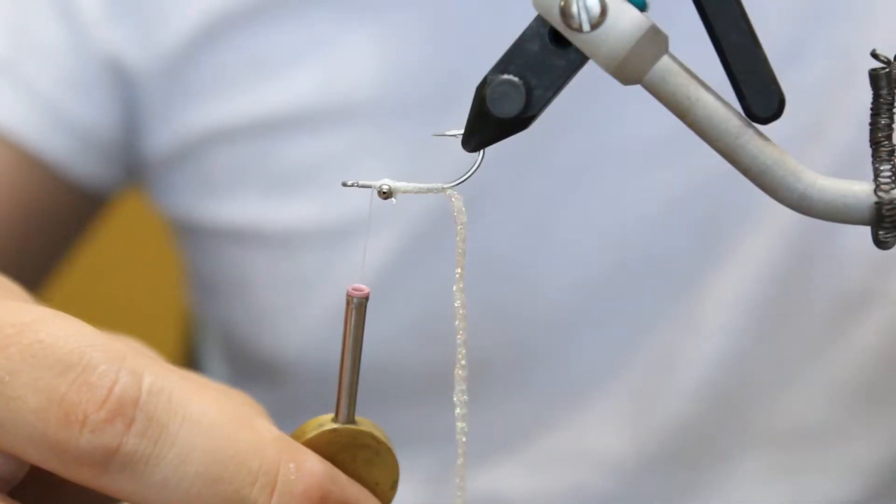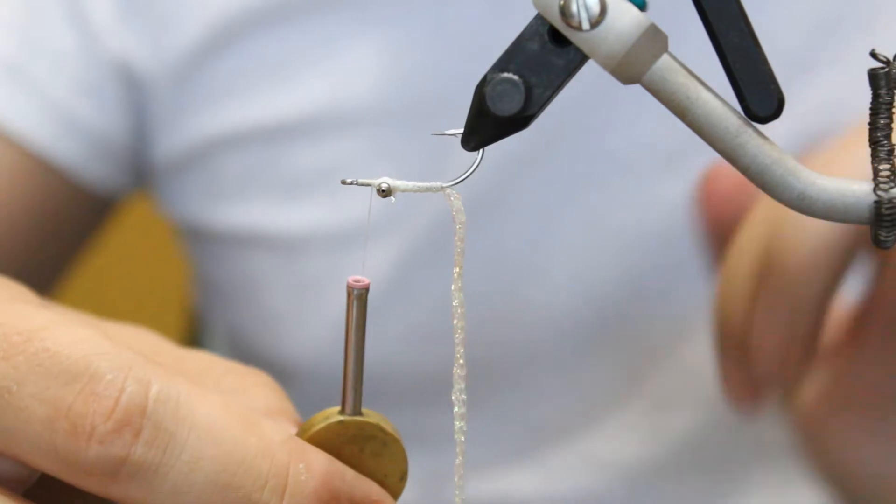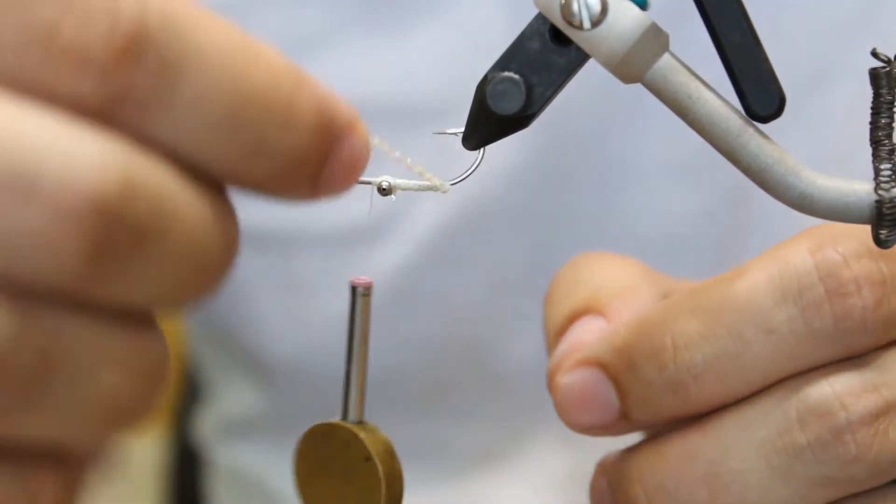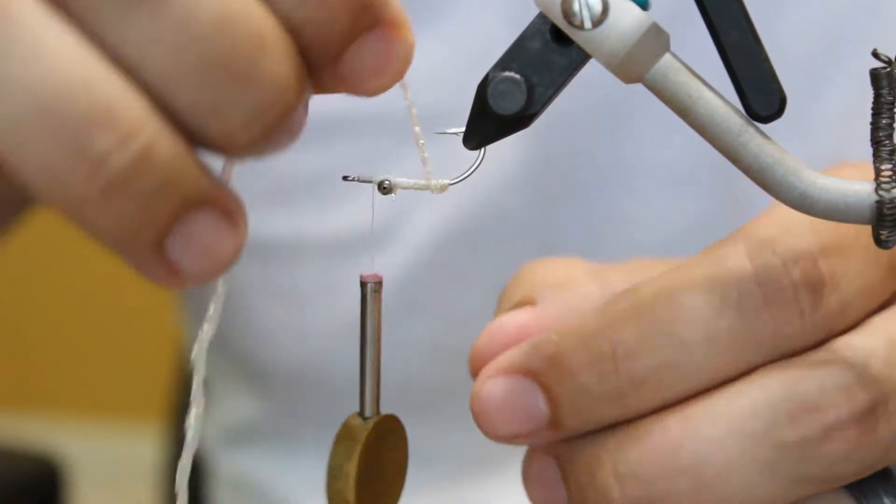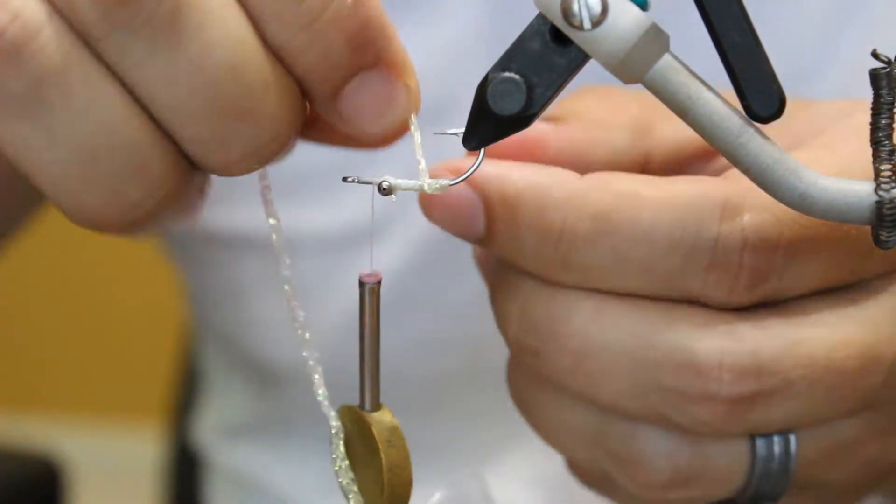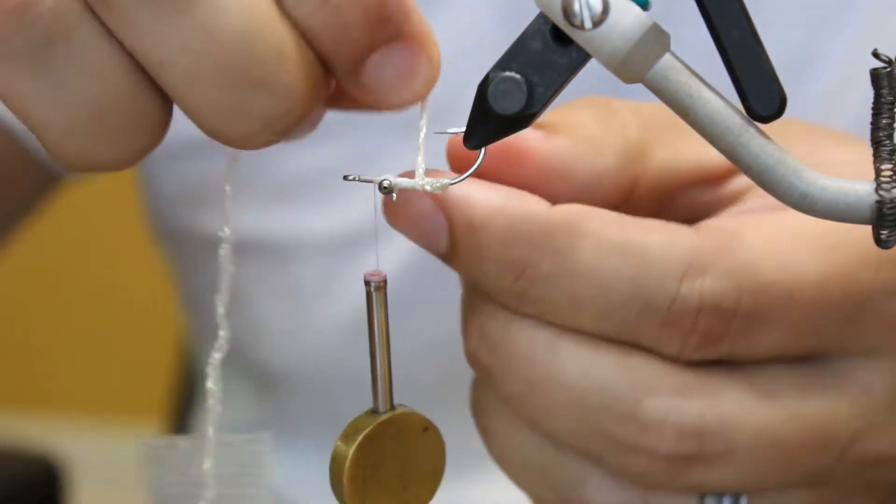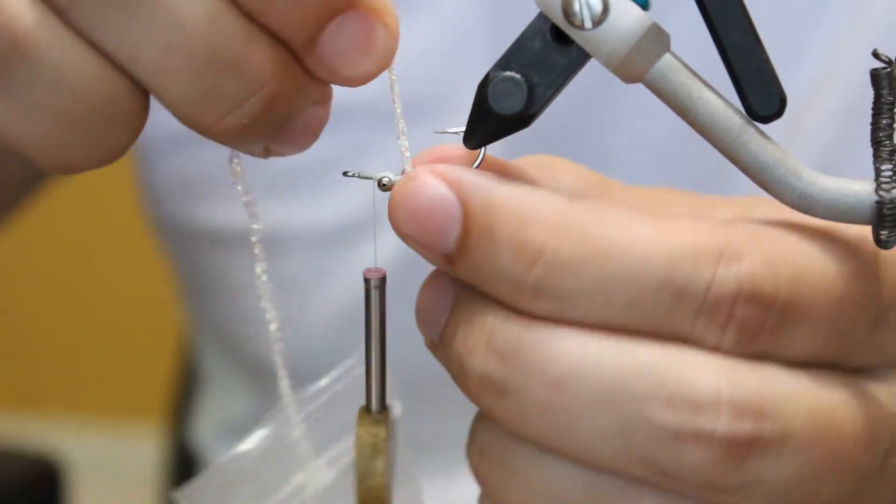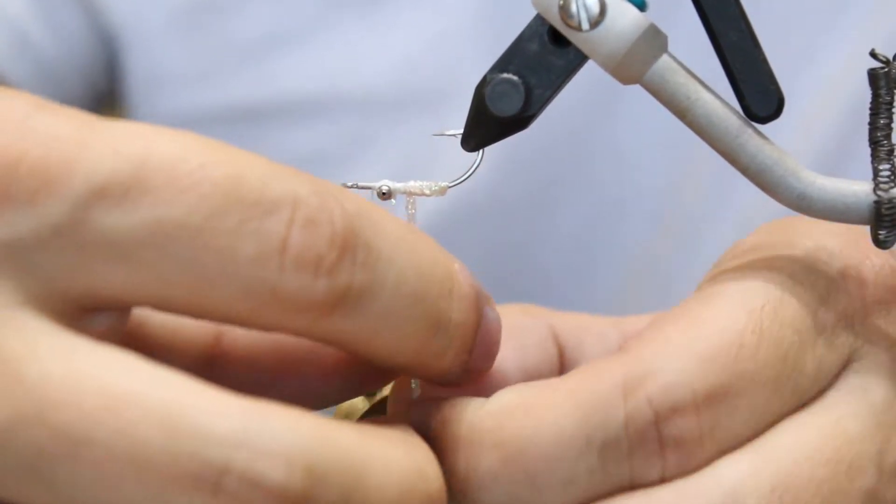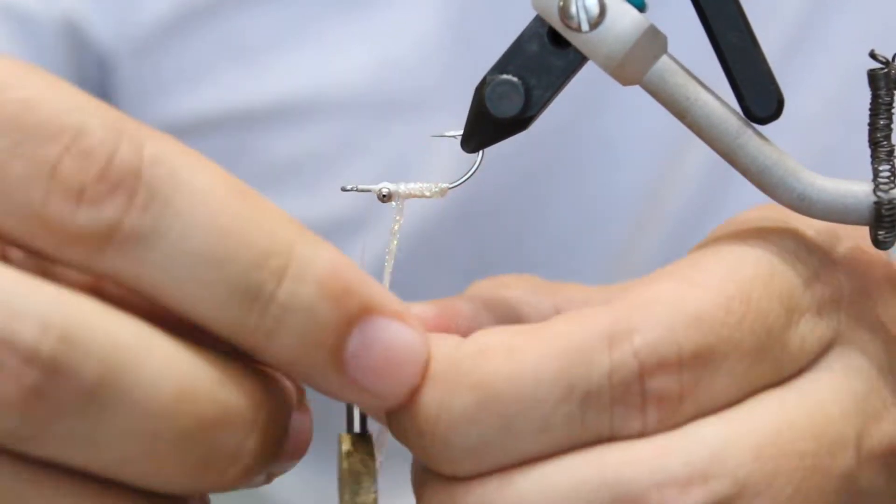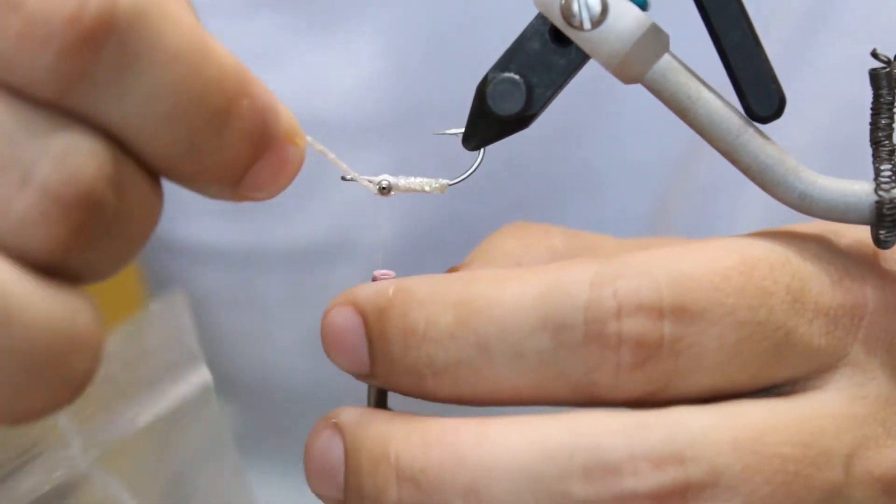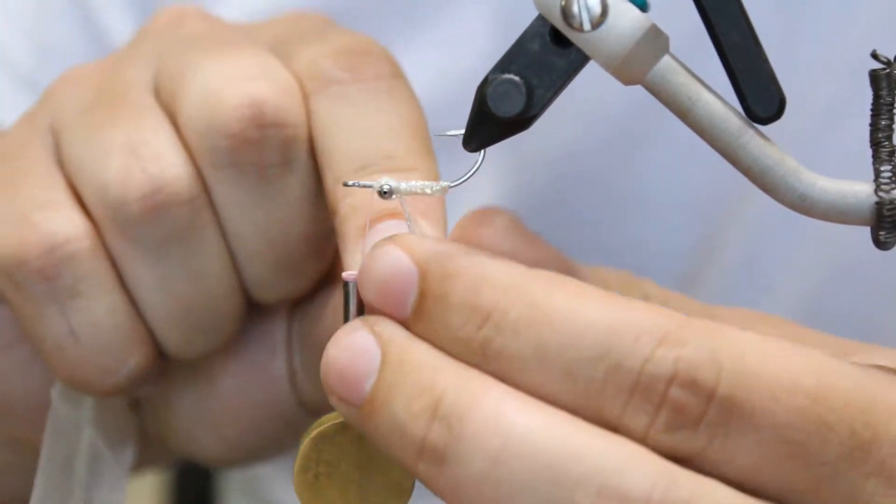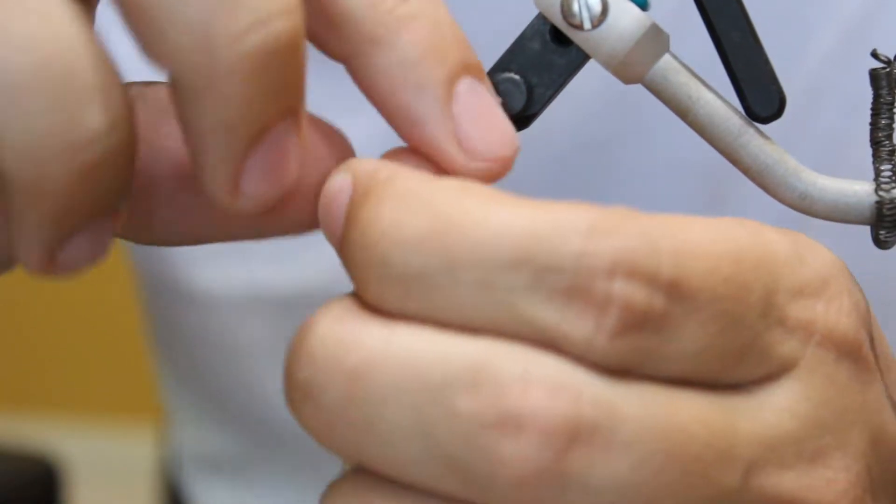And I'm going to go ahead and turn the fly upside down, and I'm going to start wrapping this towards the front. You want this to be semi-tight. You don't want it to be able to move around too much whenever you're fishing. It will start to move on you.